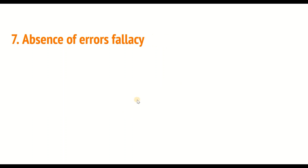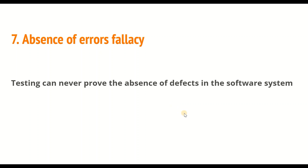The seventh principle is: absence of error philosophy. This principle states that testing can never prove the absence of defects in a software system. Testing only helps to identify defects and errors in the system. Therefore, it is important to continue testing the system throughout its lifecycle to ensure that it meets the required quality standards.